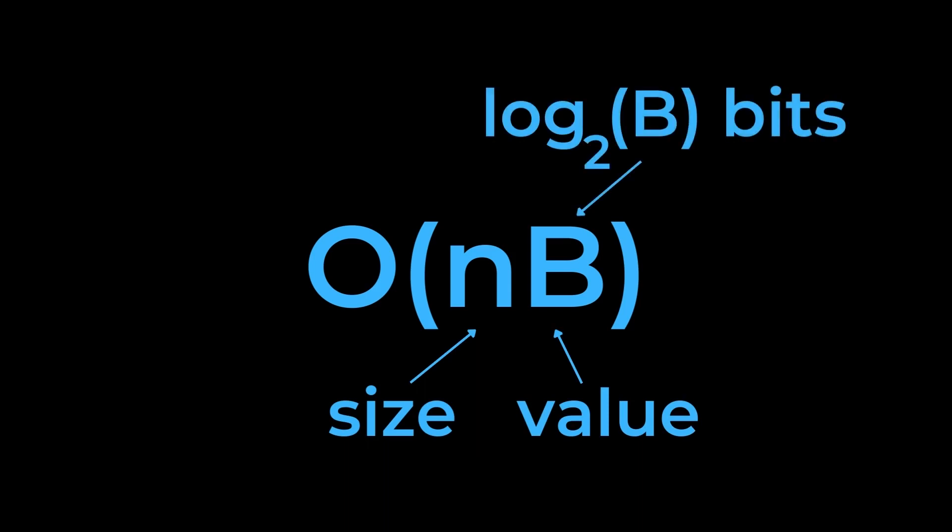Formally, the runtime of the knapsack algorithm is polynomial in n and B, but n is a size, while B is a value. B takes log(B) bits to represent, so if we want a truly polynomial algorithm, we need an O(n log B) algorithm, but there's no currently known polynomial algorithm for the knapsack problem.